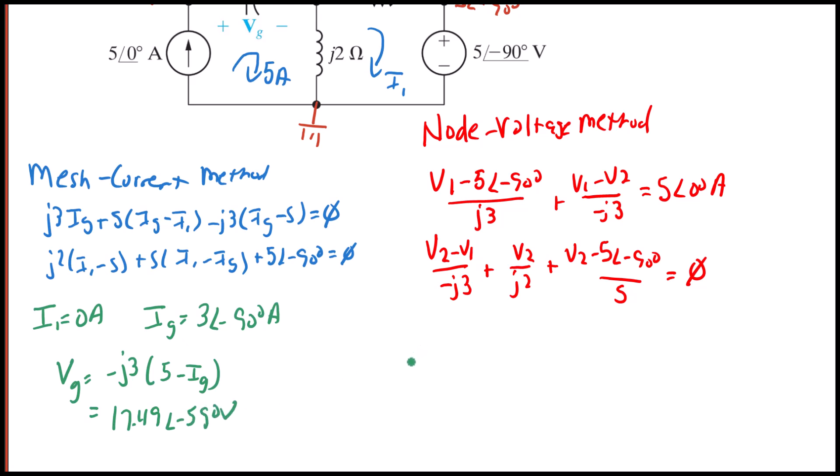Now to solve the node equations, we're going to get that V1 equals 10.29 with an angle of negative 29 degrees. And V2 is equal to 10 with an angle of 90 degrees.